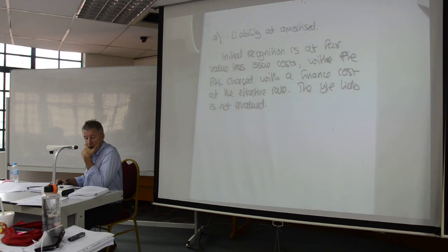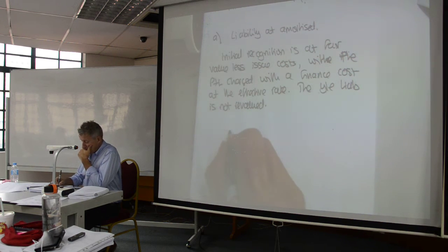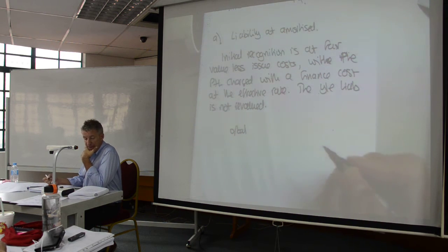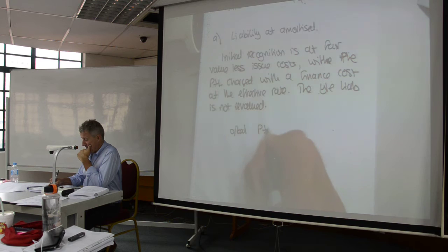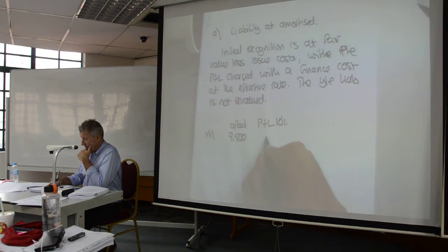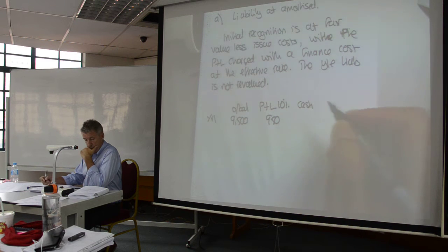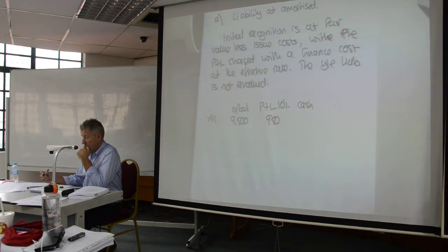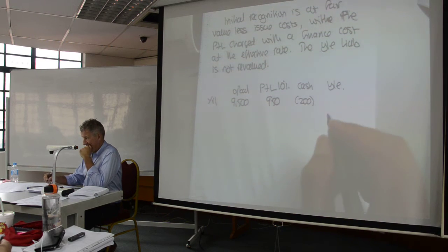This should be quite straightforward, so I'm going to do it fairly quickly. The opening balance — what's the effective rate of interest? 10%. So what's the finance cost? $950. How much cash am I paying? $200. So what's the year-end liability at the end of the first year? $10,000.